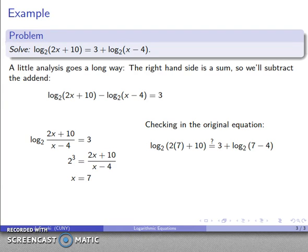So I'll substitute into my original equation. That's log to base 2 of 2 times 7 plus 10 equals 3 plus log to base 2 of 7 minus 4. Parentheses say do stuff inside first, so I take care of 7 minus 4 and 2 times 7 plus 10.